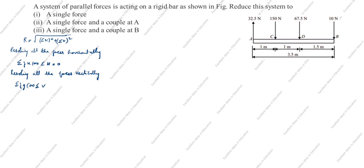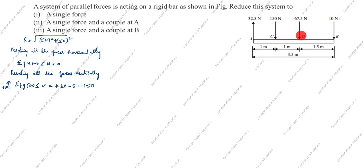Next, resolving all the forces vertically — ΣFy or ΣV: there are four forces. Taking upward as positive: +32.5 N (arrow goes up), minus 150 N (arrow goes down), minus 67.5 N (arrow goes down), minus 10 N (arrow goes down). ΣV = -195 N.